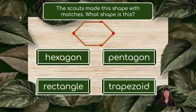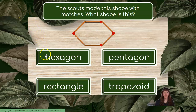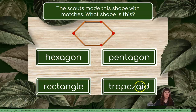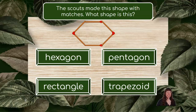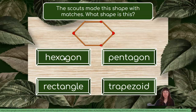The scouts made this shape with matches. What shape is this? Our choices are hexagon, pentagon, rectangle, or trapezoid. We can count the number of sides to see how many our shape has and that will tell us what the shape is. I see one, two, three, four, five, six sides on this shape. Which one of these has six sides — the hexagon, the pentagon, the rectangle, or the trapezoid? Very good! The hexagon has six sides, so this shape is a hexagon.